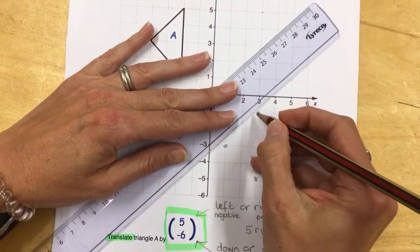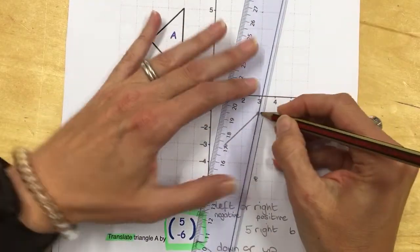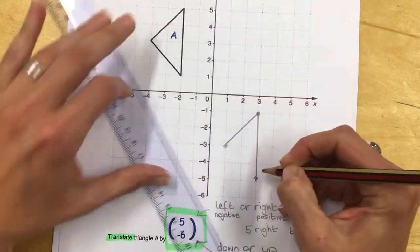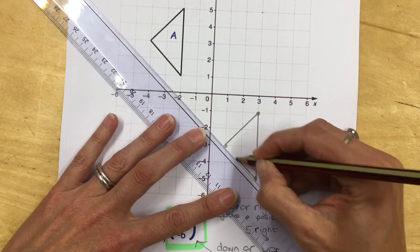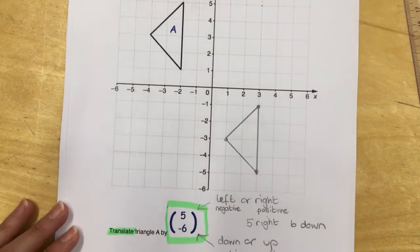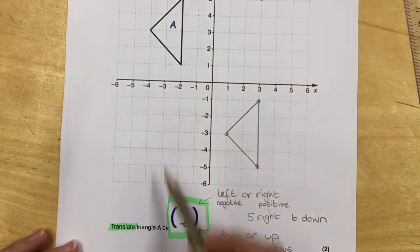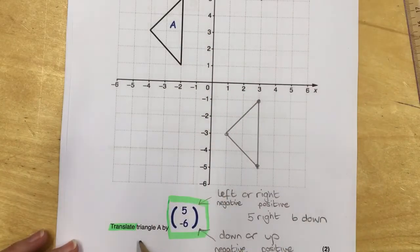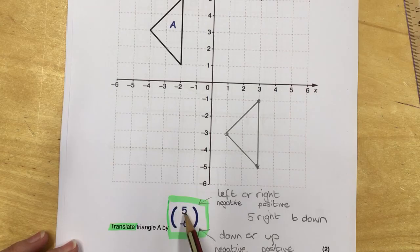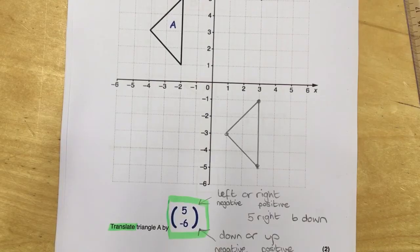Then we join the three points together to complete the translation. We've moved the shape without changing its size, translating it five to the right because of the positive number on top and six down because of the negative number on the bottom.